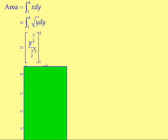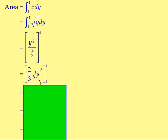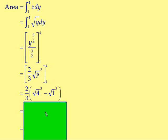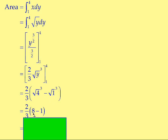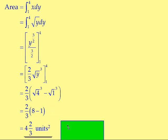When dividing by a fraction, you turn the fraction upside down and multiply, so that gives 2 thirds times the square root of y cubed. Now substitute in 1 and 4. Taking the 2 thirds out as a common factor, it's the square root of 4 cubed, take away the square root of 1 cubed. The square root of 4 is 2; cubed gives 8. The square root of 1 is 1; cubed gives 1. So it's 8 take away 1, which is 7. Then 2 thirds times 7 gives 14 thirds, which is the same as 4 and 2 thirds squared units.